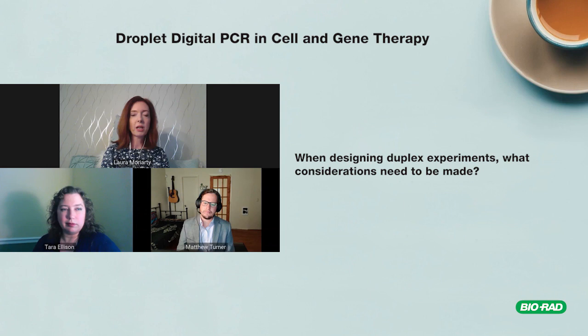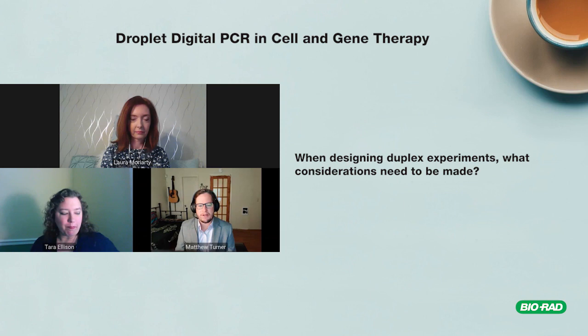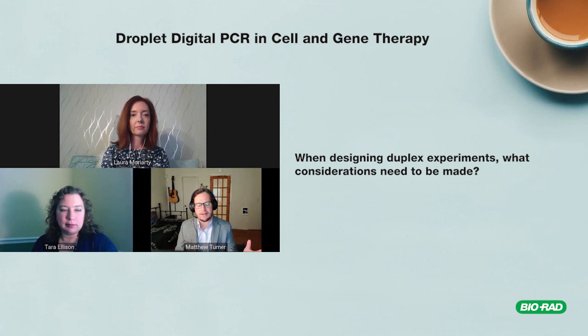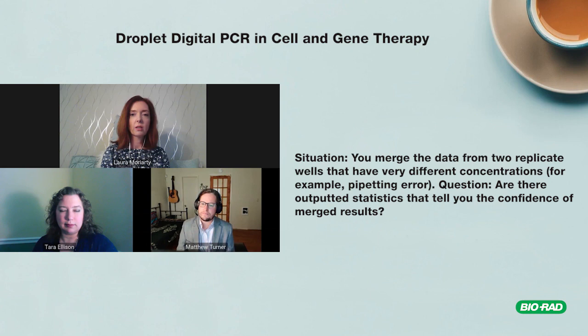For duplex design, I'd recommend designing assays the way you normally would and trying them out — the vast majority of the time they work happily together. I always recommend running assays separately first, then in pairs. With digital PCR you can actually see if there's a phenotype related to one assay being more efficient than the other, and as long as you can differentiate the populations the data is still accurate.